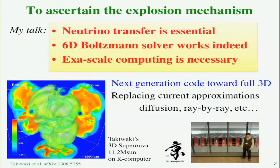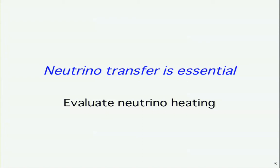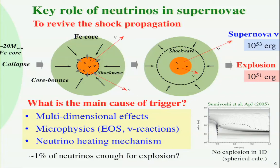Let me start with neutrino transfer to evaluate the neutrino heating. For this, I need to explain the key role of neutrinos in supernovae. So we start from the iron core collapse from the massive stars. And then there's a core bounce and shock wave forms. Shock wave stalls somewhere in between because of the material falling down. So in 1D simulations, spherical calculation, we have no explosion. Something is necessary to revive the shock propagation. So the question is, what is the main cause of trigger? We have some mixture of multi-dimensional effects, microphysics, neutrino reactions and equation of state, dense matter, and neutrino heating mechanism.